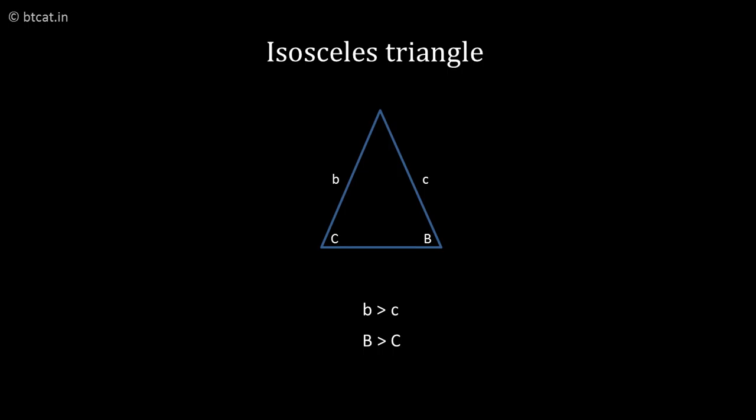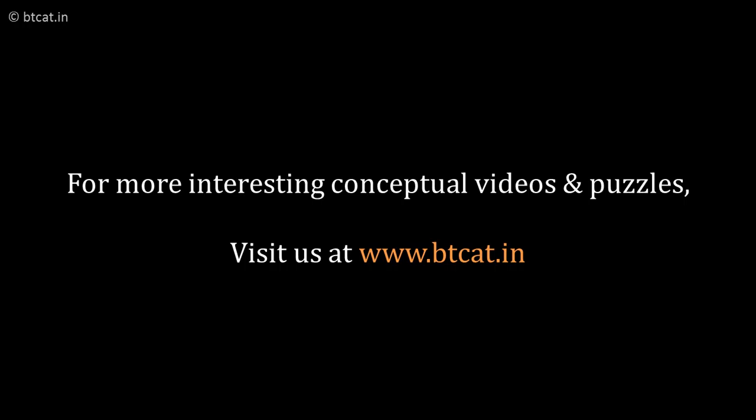So if side b is greater than side c, angle B will also be greater than angle C. The angle which is greater will be the one which has a corresponding side greater - that is what the rule says. So these are some of the important properties of triangle.